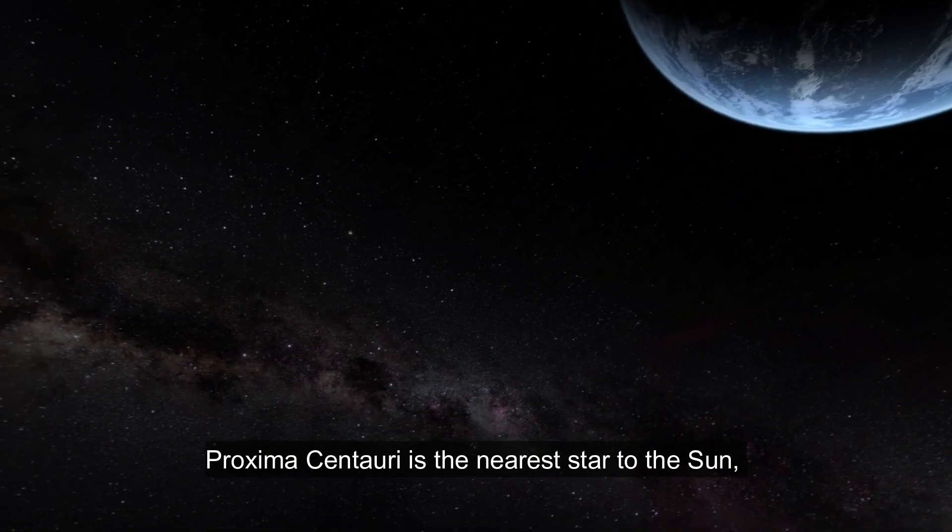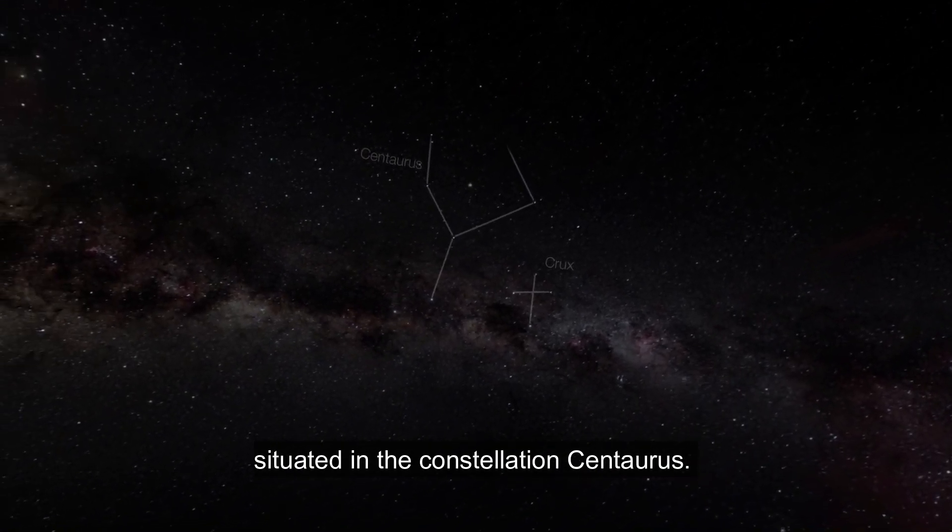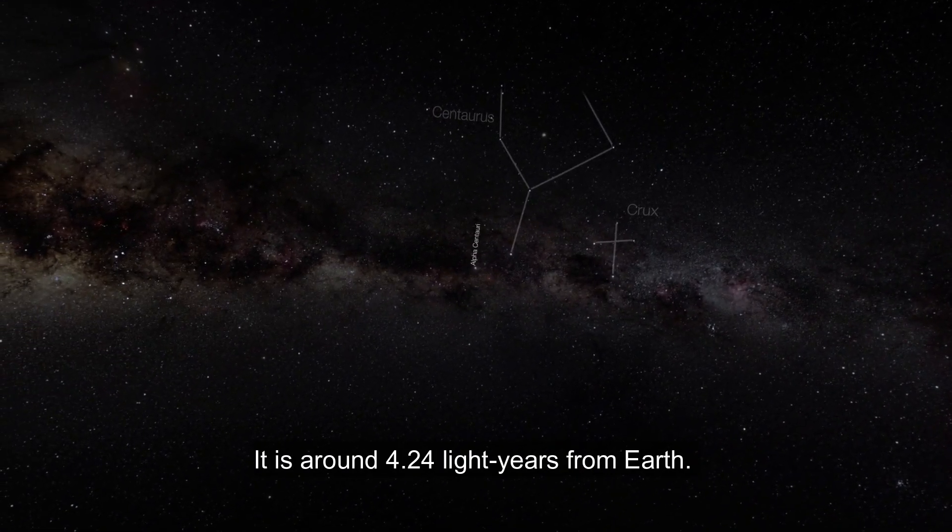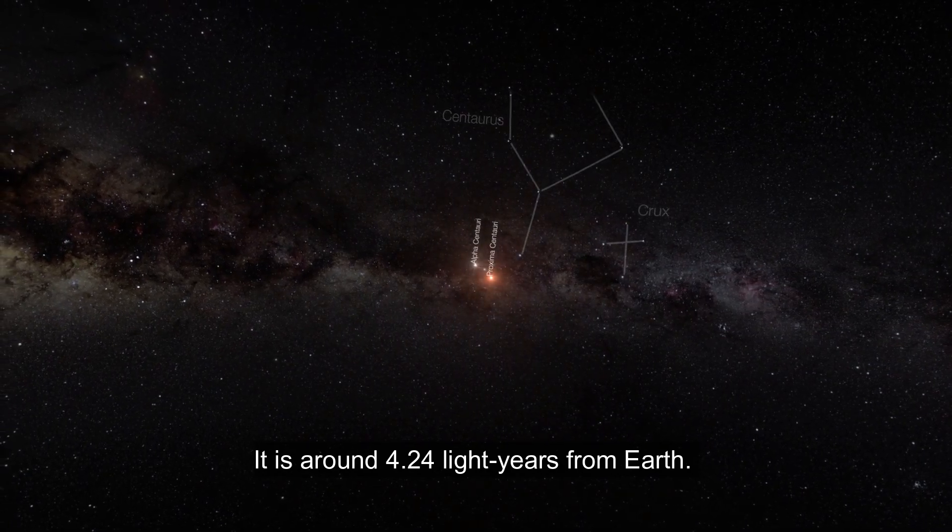Proxima Centauri is the nearest star to the Sun, situated in the constellation Centaurus. It is around 4.24 light-years from Earth.